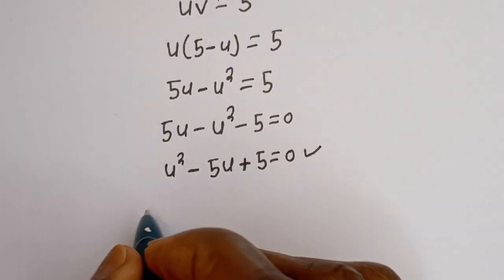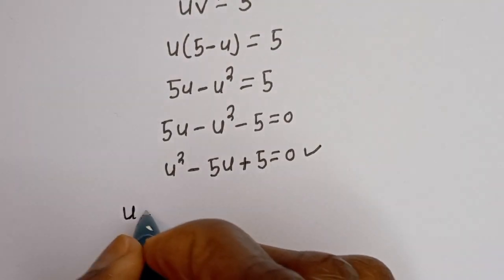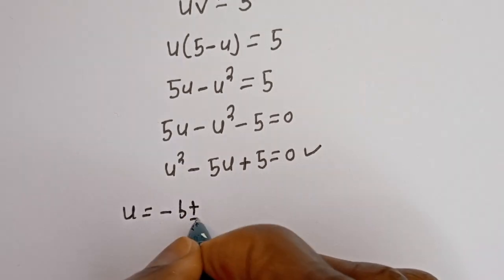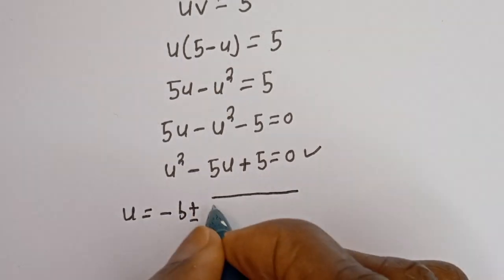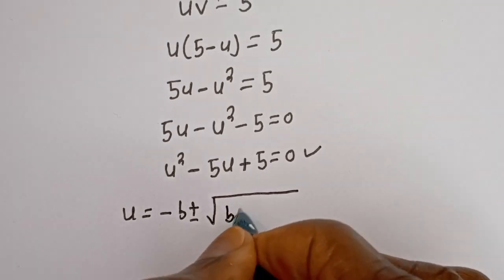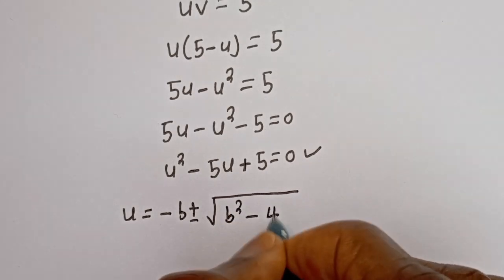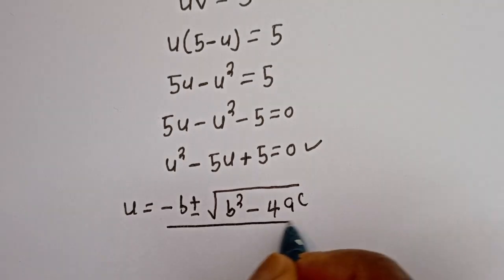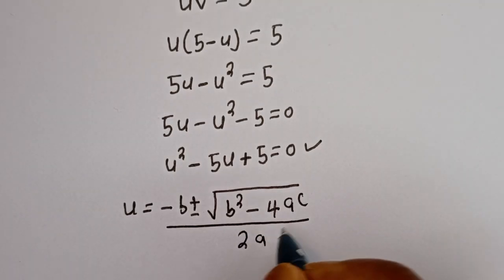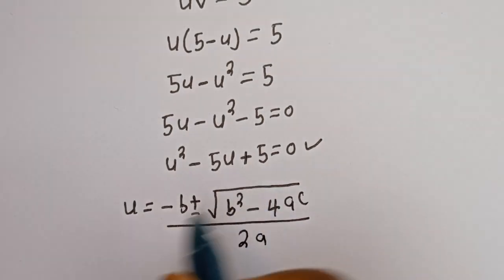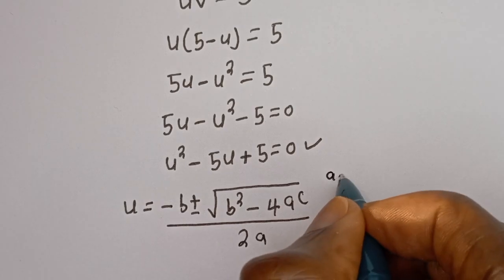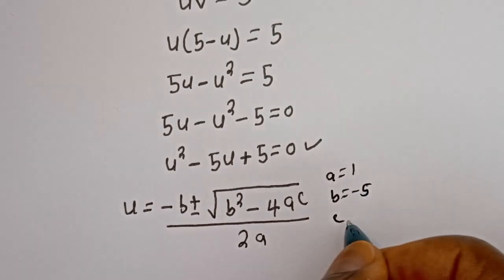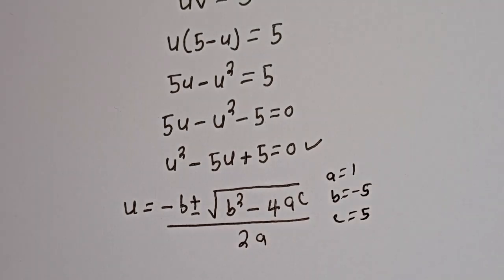From the quadratic general formula, u is equal to minus b plus or minus the square root of b squared minus 4ac, divided by 2a. From this equation, a is equal to 1, b is equal to minus 5, and c is equal to 5.